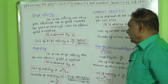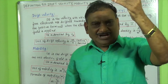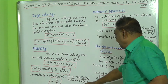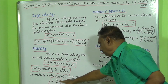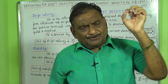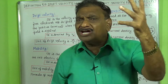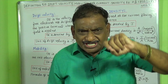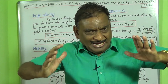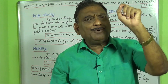The formula for mobility is drift velocity divided by electric field — vd by E. Both the drift velocity and mobility describe the velocity with which electrons are drifted towards the positive terminal.